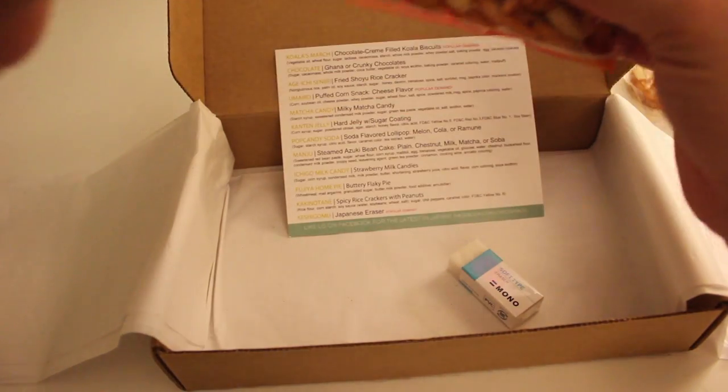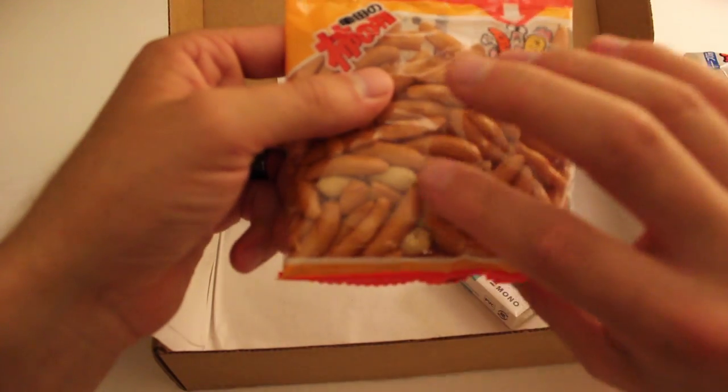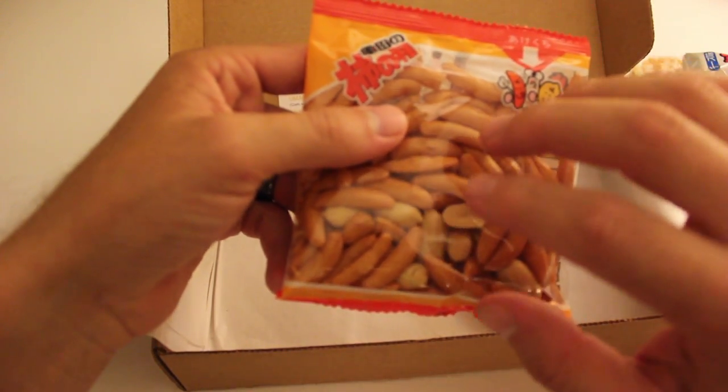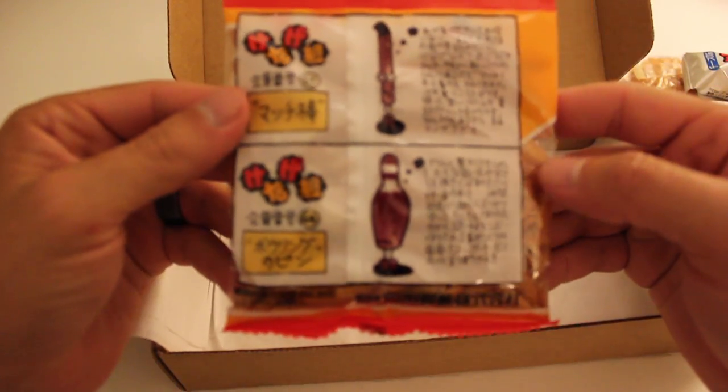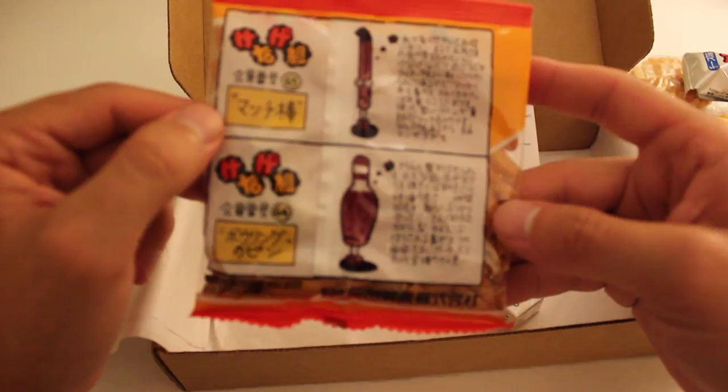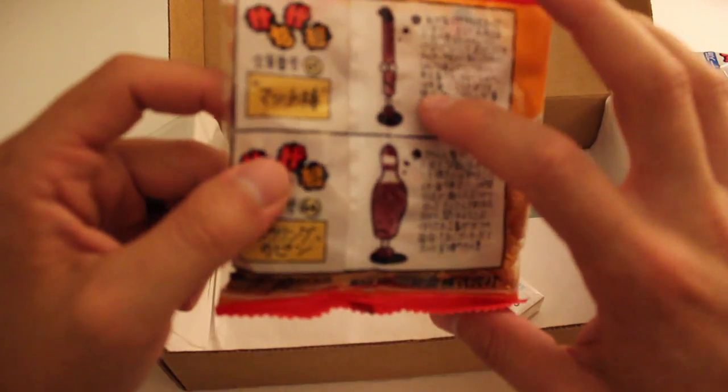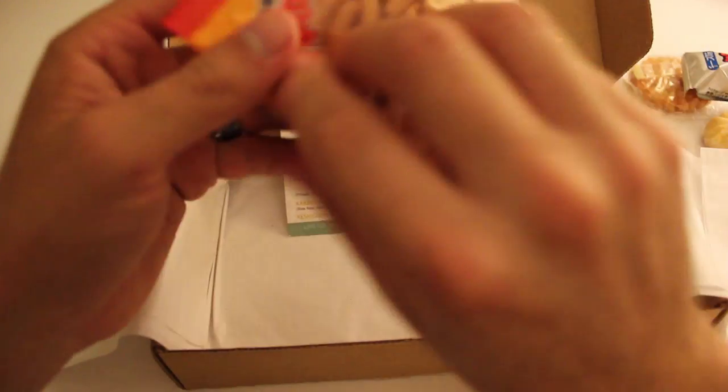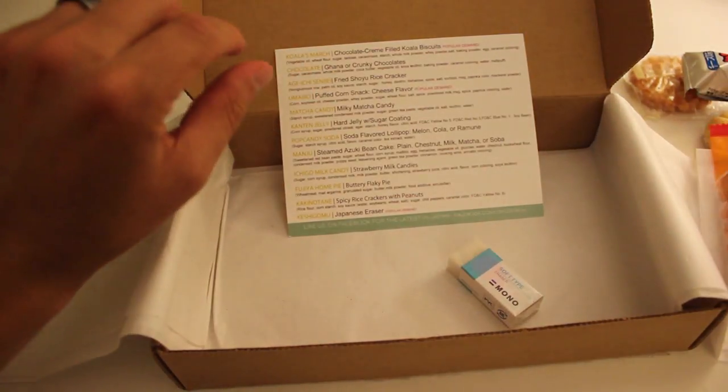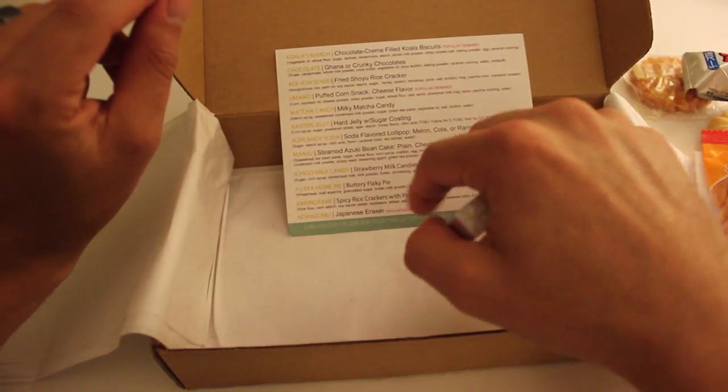This big one here is spicy rice crackers and peanuts. I think I will probably save this one and enjoy it with a beer because that sounds like a delicious bar snack. I have no idea what all the Japanese says on the back, but I love their illustrations. Looks like a bowling pin and some kind of comic strip. And the last thing here is this soft type eraser. Japanese eraser. This is a popular demand item.